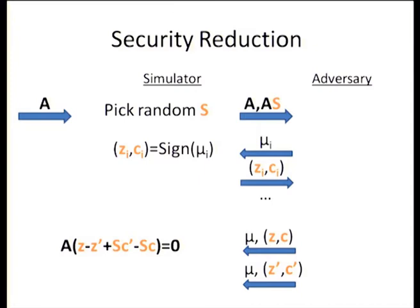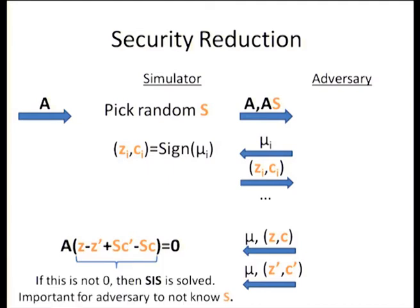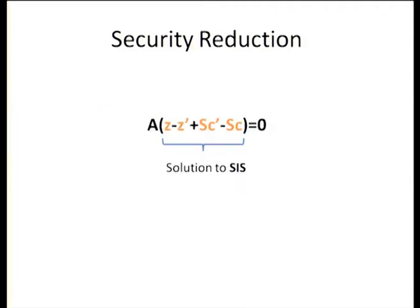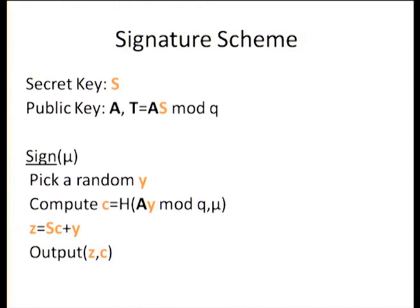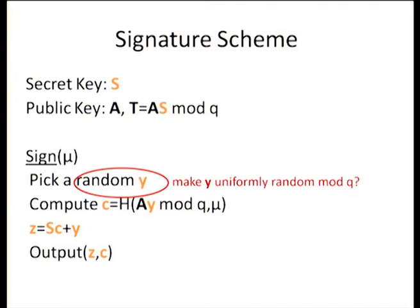Here's the security reduction, reducing from SIS. You're given some A and want to find a small vector S such that AS equals zero mod Q. You pick a random S, send A and AS to the adversary as the public key, then sign validly because you know S. Using the forking lemma, you end up with A times (Z minus Z prime) plus S(C minus C prime) equals zero. This is a valid SIS solution as long as all these terms are small — which is why it's important that the adversary doesn't know S, so they can't force this to be zero.